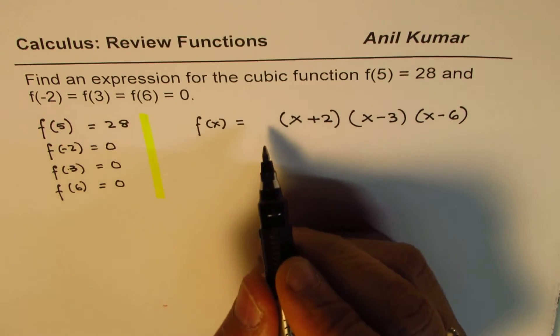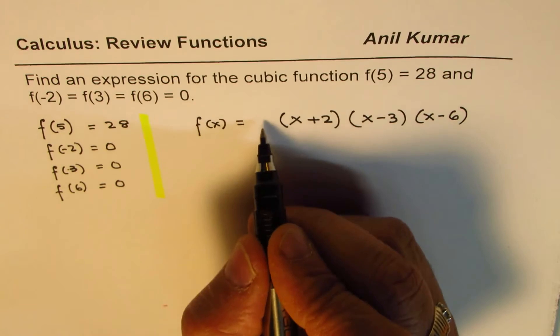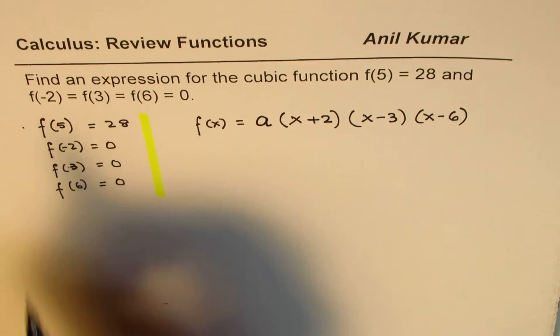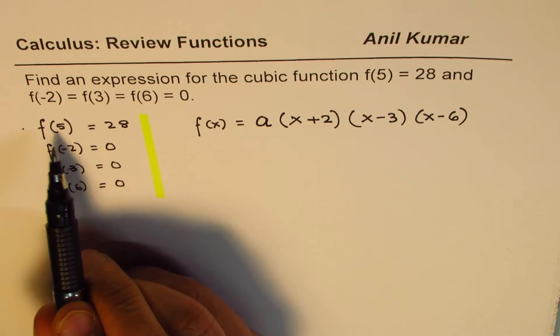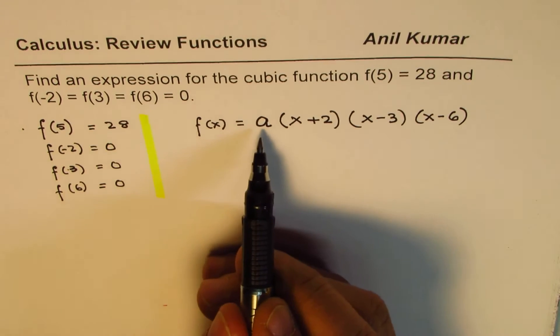This is because there could be many cubic functions which will satisfy these conditions. However, there is going to be only one which will satisfy the first equation, which is at 5 the value of the function is 28, and that gives us the value of a.